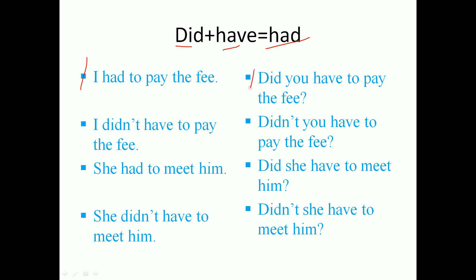To form a question: 'Did you have to pay the fee?' Remember, 'did' plus 'not' equals 'didn't'. So for negatives: 'I didn't have to pay the fee.' 'Didn't you have to pay the fee?' Another example: 'She had to meet him.' Question: 'Did she have to meet him?' Negative: 'She didn't have to meet him.' Tag question: 'Didn't she have to meet him?'